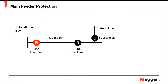Main feeder protection: since the combination of a line recloser and its control is cheaper than a circuit breaker with a separate relay, reclosers are sometimes used where the required continuous current or available fault current is not very high, because most reclosers have smaller ratings than circuit breakers.